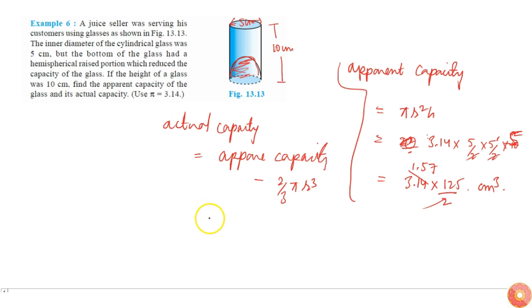So this will become: apparent is 1.57 times 125, minus this will become 2/3 times 3.14 times r³. r³ is 5 times 5 times 5, divided by 2 times 2 times 2.